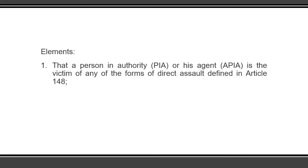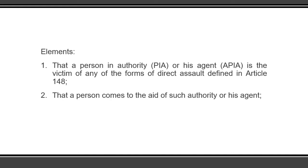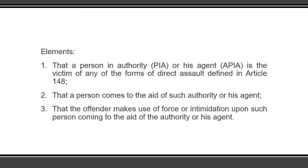What are the elements of indirect assault? The elements of indirect assault are: number one, that a person in authority or his agent is the victim of any of the forms of direct assault defined in Article 148; number two, that a person comes to the aid of such authority or his agent; and number three, that the offender makes use of force or intimidation upon such person coming to the aid of the authority or his agent.